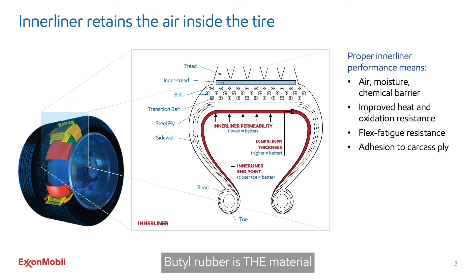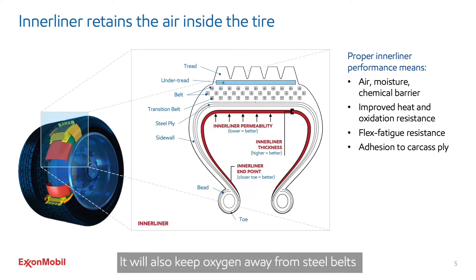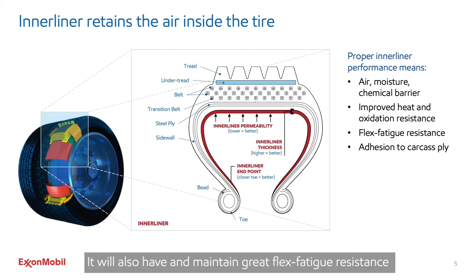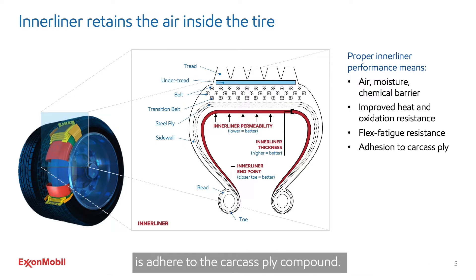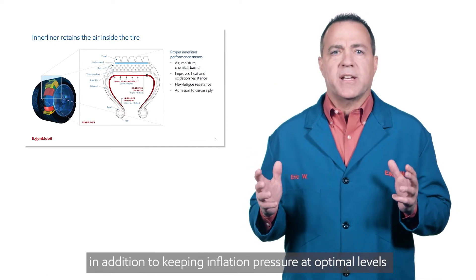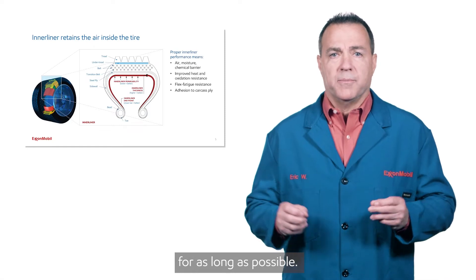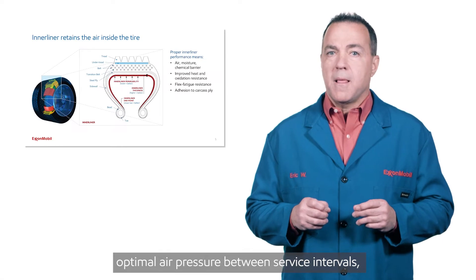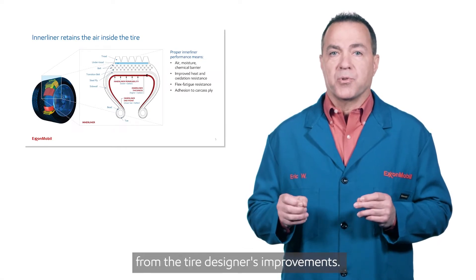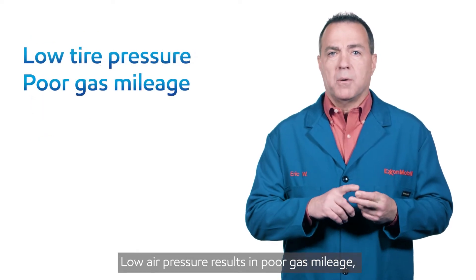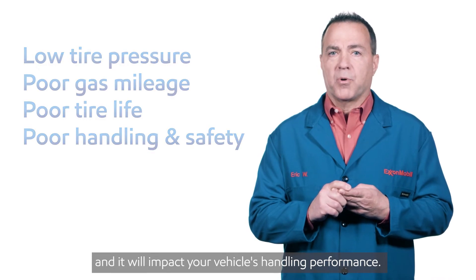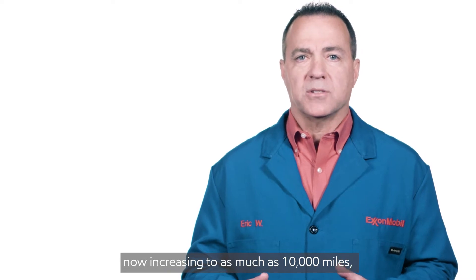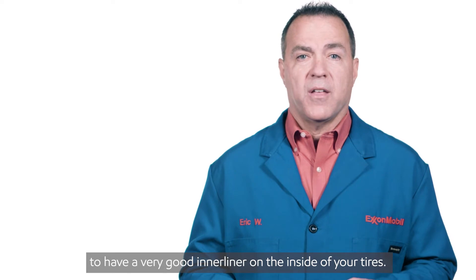Butyl rubber is the material which enables the best inner liner performance. A good inner liner will keep moisture and chemicals away from the internal tire components. It will also keep oxygen away from steel belts so they are protected against oxidation. It will also have and maintain great flex fatigue resistance throughout the life of the tire. Another thing a good inner liner must do effectively is adhere to the carcass ply compound. It needs to do all of these things in addition to keeping inflation pressure at optimal levels for as long as possible. If the tire doesn't maintain optimal air pressure between service intervals, the consumer will lose the performance enhancements from the tire designer's improvements. Low air pressure results in poor gas mileage, poor tire life, and it will impact your vehicle's handling performance. With vehicle service intervals now increasing to as much as 10,000 miles, it is more important than ever to have a very good inner liner on the inside of your tires.